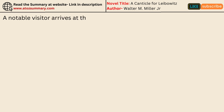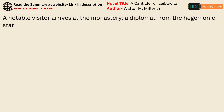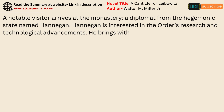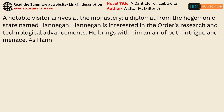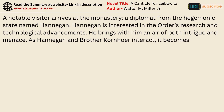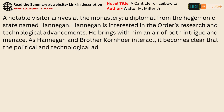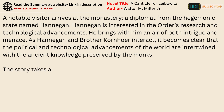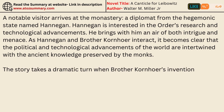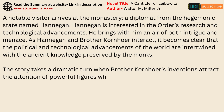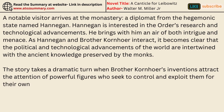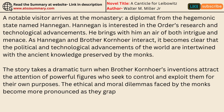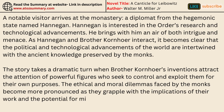A notable visitor arrives at the monastery: a diplomat from the hegemonic state named Hannigan, who is interested in the Order's research and technological advancements and brings with him an air of both intrigue and menace. As Hannigan and Brother Kornhauer interact, it becomes clear that the political and technological advancements of the world are intertwined with the ancient knowledge preserved by the monks. The story takes a dramatic turn when Brother Kornhauer's inventions attract powerful figures who seek to control and exploit them, and the ethical and moral dilemmas faced by the monks become more pronounced.